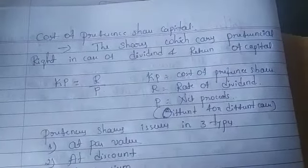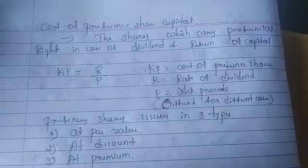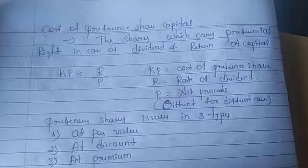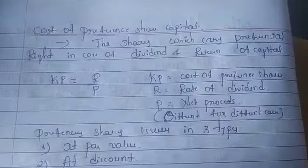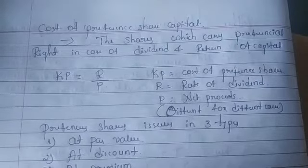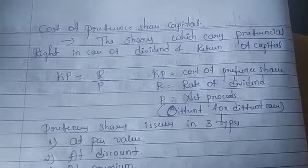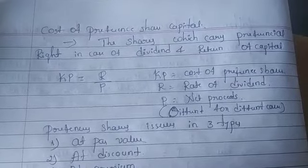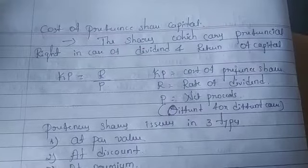Preference shares are shares which get preference in case of dividend and in case of capital return during a winding-up situation. Preference shares get the first right to receive their share capital. So shares which have a preferential right in case of dividend and also in capital are known as preference shares. The cost of preference share capital is what the expectations or return from preference share capital is.